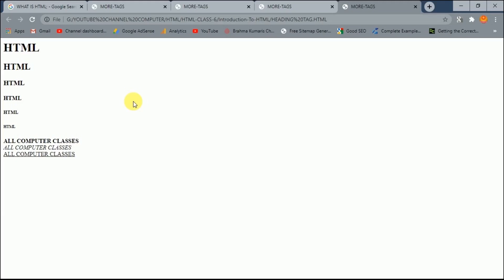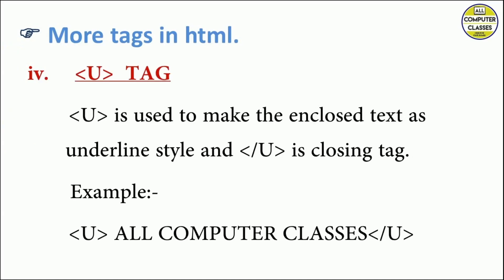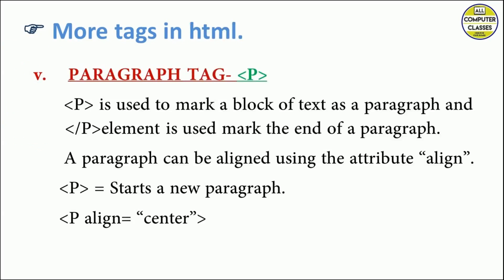I hope you are clear with heading tags and the three tags — bold, italic, and underline. Next is the paragraph tag. It is used to make a block of text a paragraph. It is again a container tag having both the opening and closing tags. It indicates the beginning and end of a paragraph. When we have a paragraph we can align it to the left side, right side, or center using the align attribute, which takes values center, left, or right.